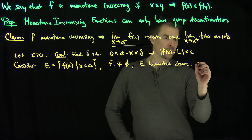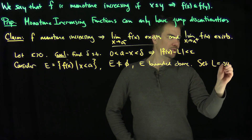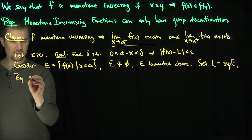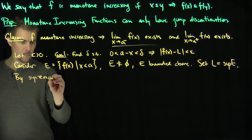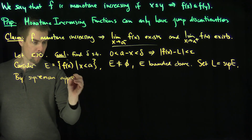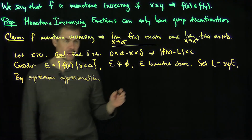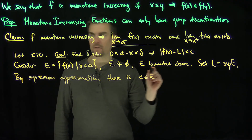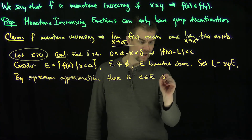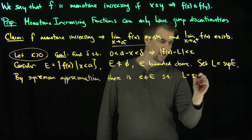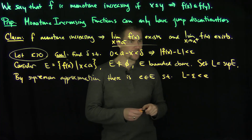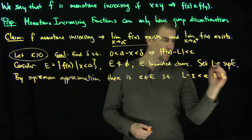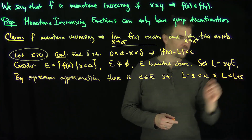Hence the supremum exists. Let me set l to be the supremum of this set. Now by supremum approximation, there is an element e, for our given epsilon greater than zero, such that l minus epsilon is strictly less than e. And of course since e is in the set E, we know it's less than or equal to the supremum l — so less than l plus epsilon.